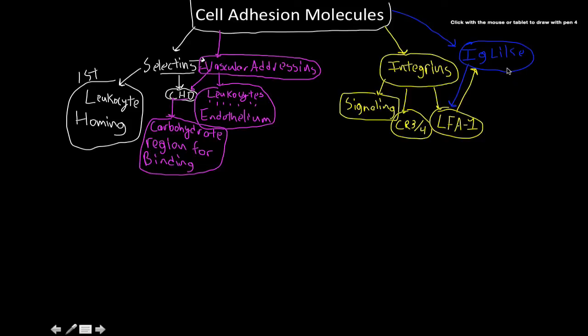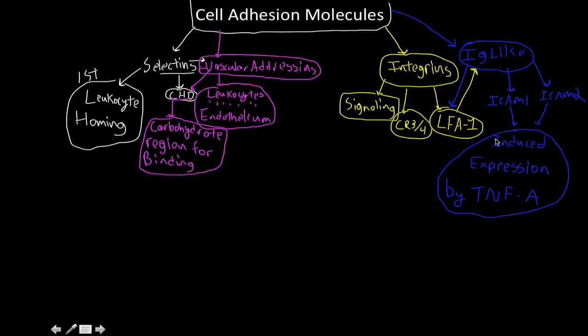So for the IG-like molecules, there's ICAM1 and ICAM2. And these guys, they obviously played this whole role in binding here with the integrins, but their expression is induced. So we have induced expression by tissue necrosis factor alpha. And you'll understand what each and every one of these does a lot better when we talk about leukocyte and neutrophil homing.